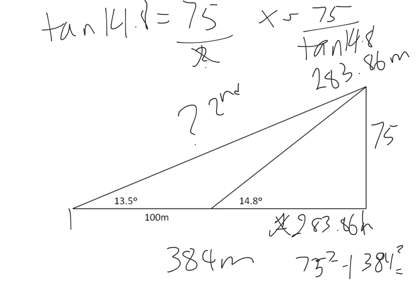All right, 75 squared plus 384 squared equals, the answer is 153081, square root that. 391.3 meters, final answer.